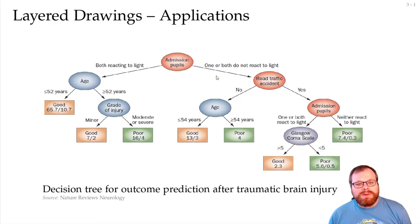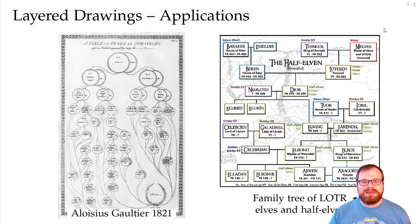First, there are some applications of these layered drawings. For example, for decision trees, that's usually what you want to do. You place your decision, and then you go to the left or to the right, based on what you choose, and then you get your whole decision tree, where in the end you get some result. This drawing style has a long tradition. It's already been used here in 1821 for a table of general questions, and it's also used here for this family tree of Lord of the Rings, elves and half-elves.